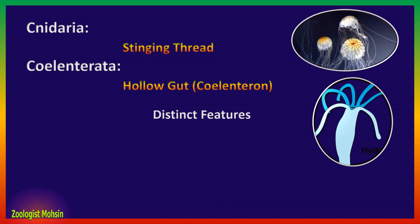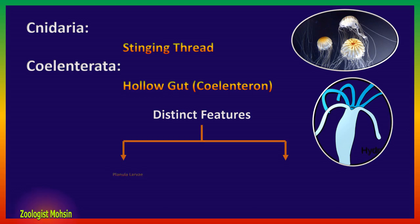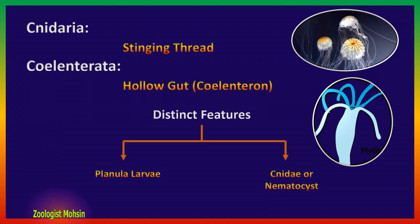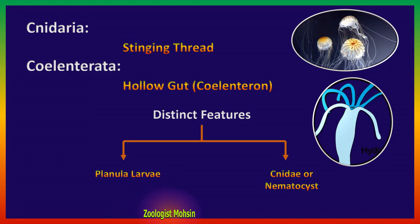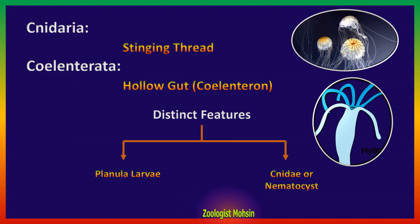There are two distinct features which are only present in this Phylum. Number one is Planula larva, and number two is Cnidae or nematocysts. If you encounter the name Planula anywhere, you must recognize it is referring to Cnidarians or Coelenterata. Similarly, if you read the word Cnidae or nematocysts anywhere, concentrate — this is about Coelenterata or Cnidarians, because these two features are unique to Cnidarians.